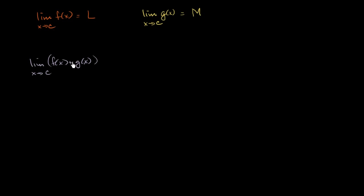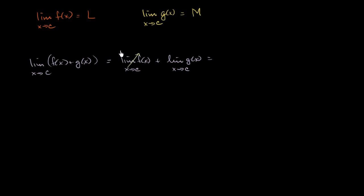You could look at this visually — if you look at the graphs of two arbitrary functions, you would essentially just add those two functions. It'll be pretty clear that this is going to be equal to the limit of f of x as x approaches c, plus the limit of g of x as x approaches c, which equals L plus M. This is often called the sum rule or the sum property of limits.